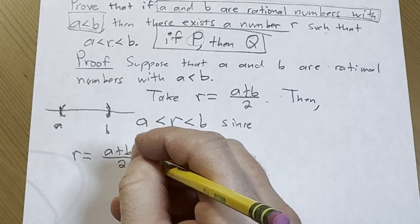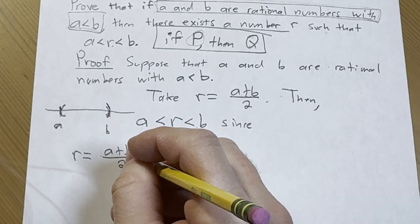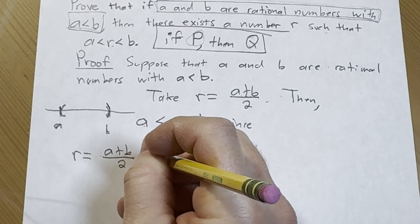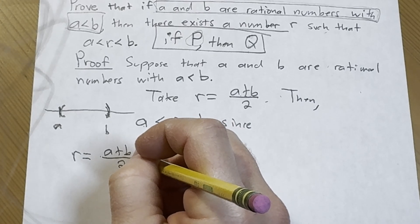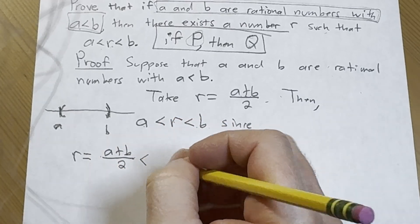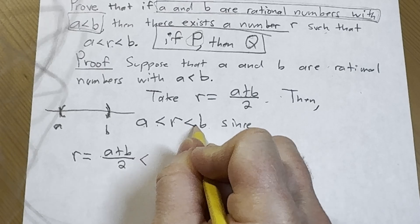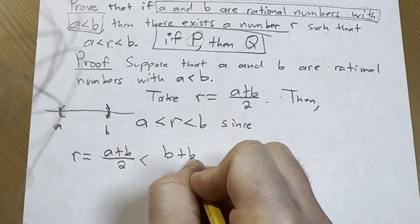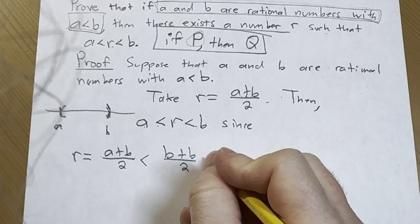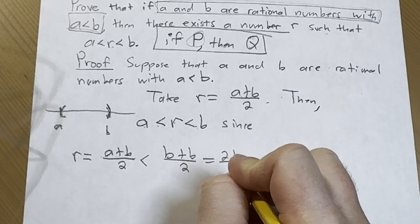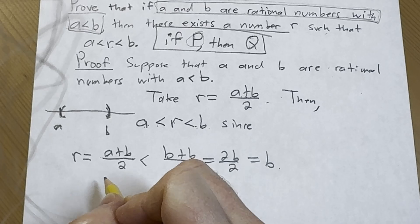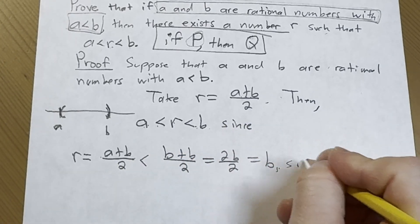So to show it's less than b, we can say r equals (a+b)/2. So r is less than, well a is less than b, right, so this is less than (b+b)/2, which is 2b/2, which is b. So r is less than b.